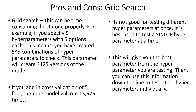And if you add in cross-validation — like five folds — then the model will run 15,625 times. That's a lot of time and a lot of models. So for Grid Search, it's not ideal for testing many different hyperparameters at once. It is best used to test a single hyperparameter at a time. Testing a single hyperparameter at a time will give you the best value, and you can then use that information to test other hyperparameters individually.